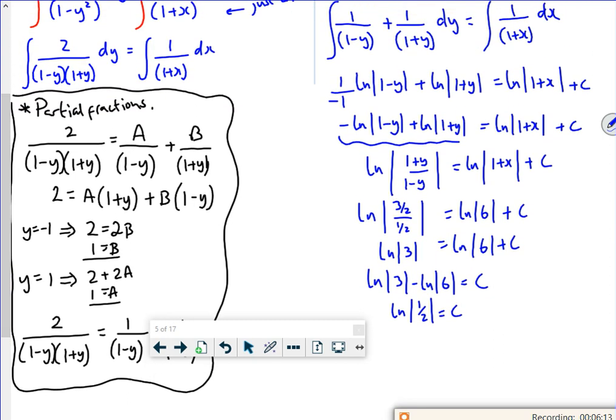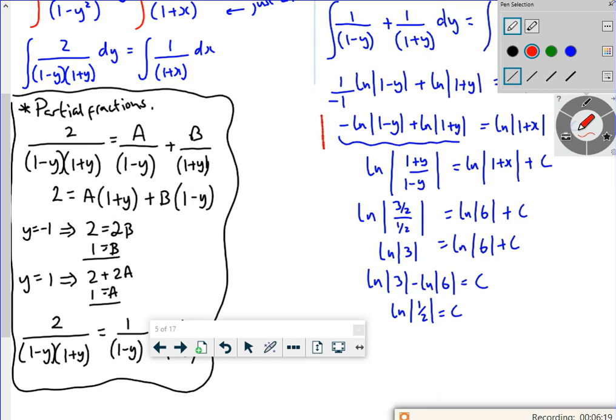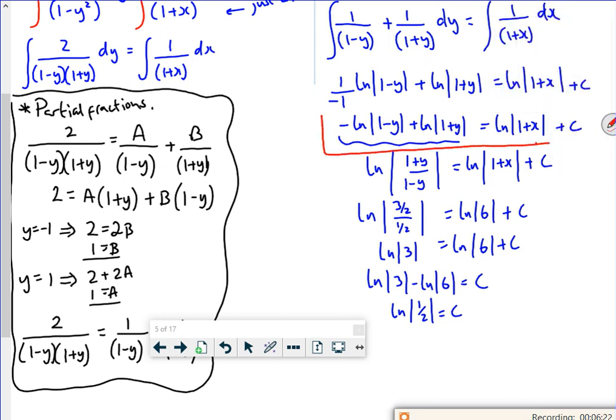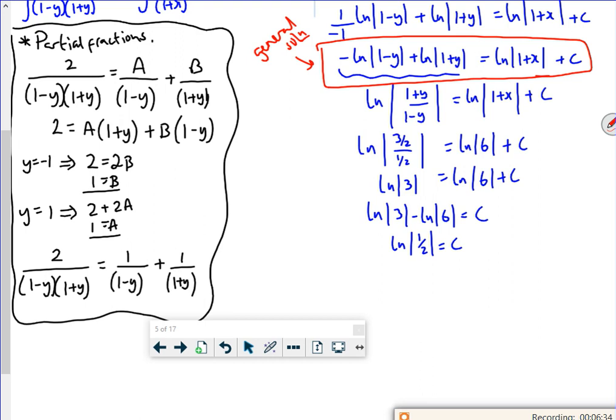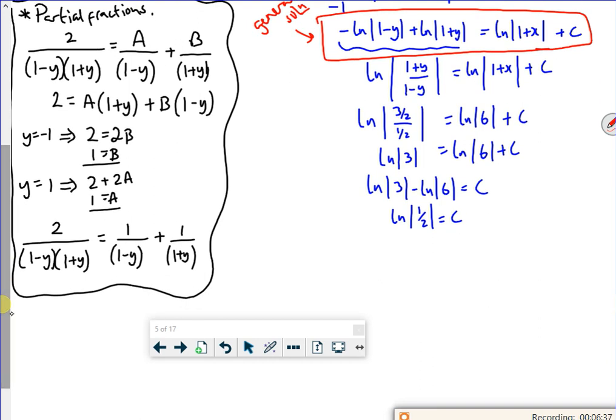Where's my general? So this here, we'll put a box around it because it's a bit messy. This here is my general solution. That there is my general solution. So if I put the log half in C, so I've got, I'm going to use this here, this one. So I've got log of 1 plus y over 1 minus y is log of 1 plus x plus log of a half.